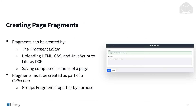We just talked about page fragments as the building blocks for content pages, so let's take a look at how we actually make them. Fragments are made in the fragment editor. You can also upload HTML, CSS, and JavaScript to Liferay DXP, and we can repurpose completed sections of a page and turn those into fragments to use on other pages as well. Fragments must be created as part of a collection, so it's important that we keep them in groups we can manage.